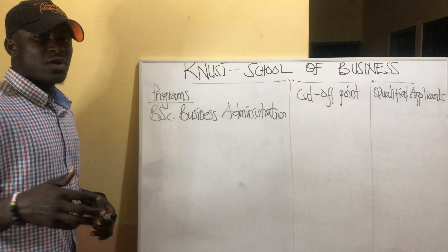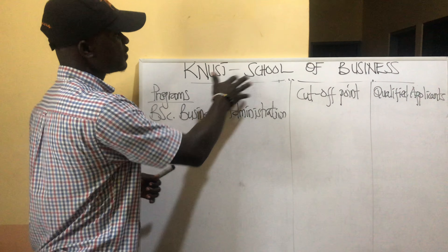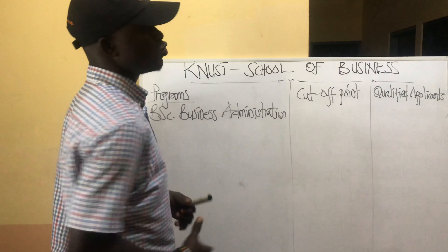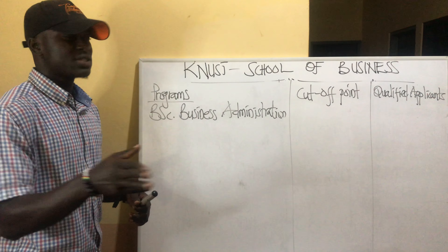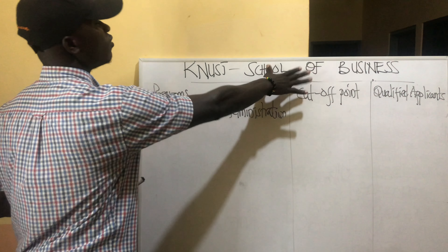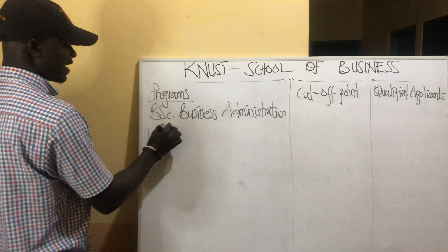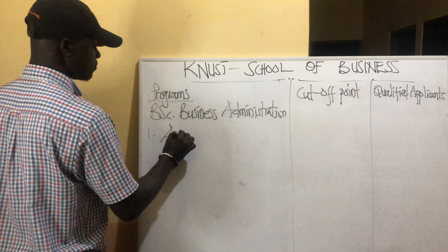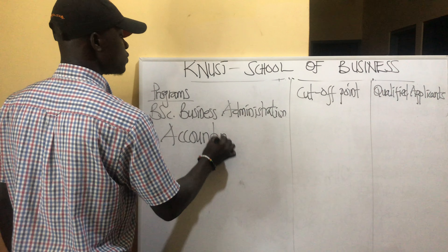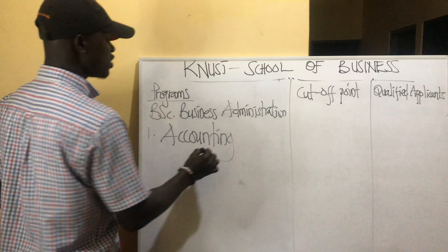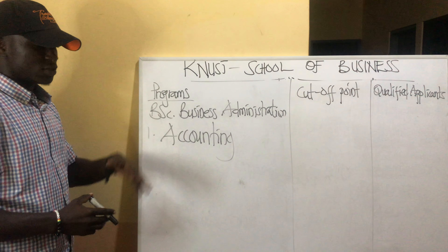Today we are going to look at three programs. This is part one of the video content on the School of Business at KNUST. The first one is accounting — your program is going to be Bachelor of Science in Business Administration.